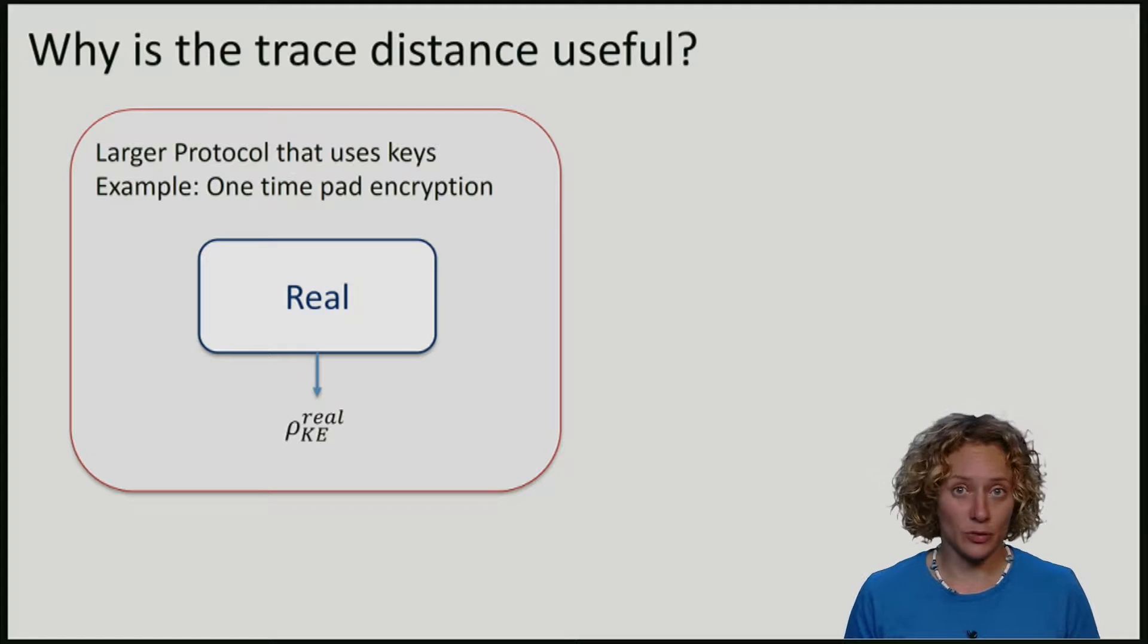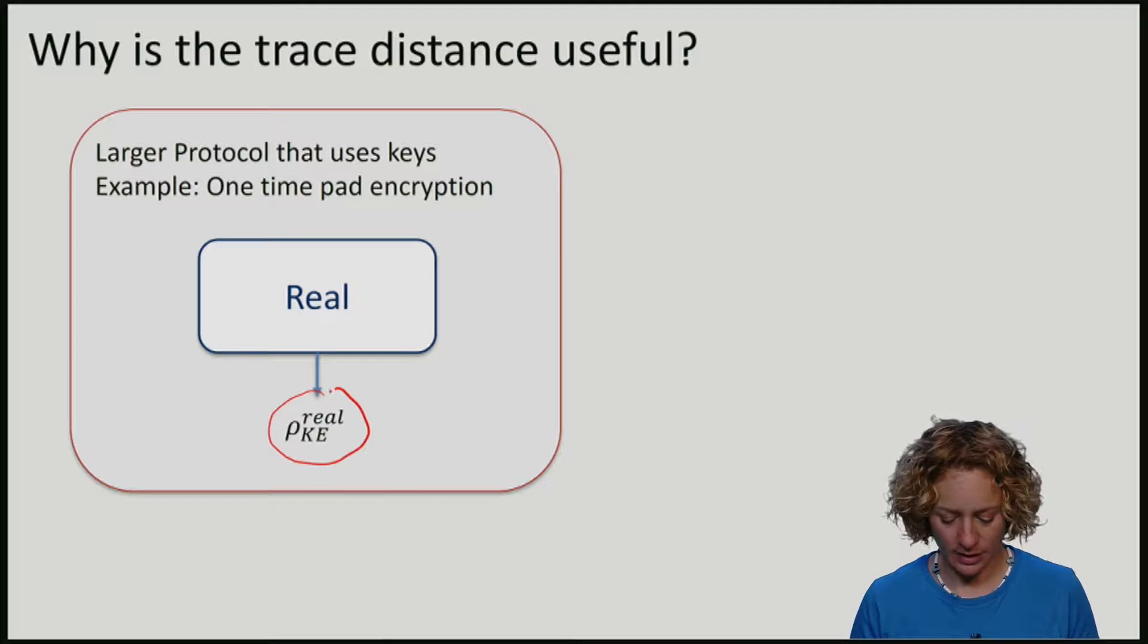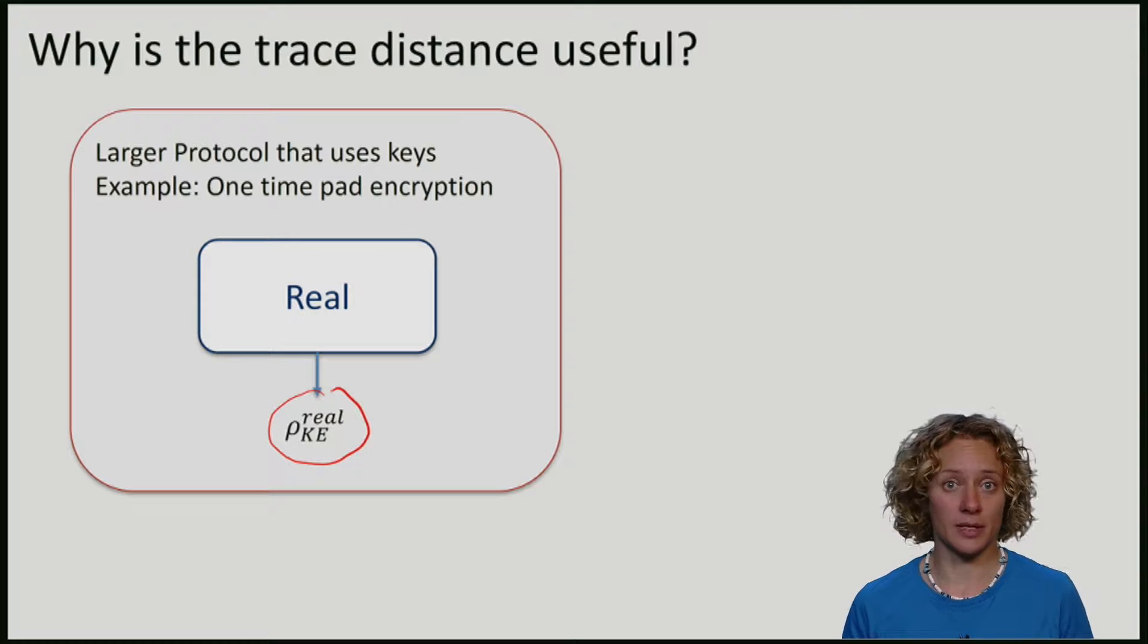If we have a real protocol that produces a real state KE, this is very difficult to analyze now what happens to the one-time pad. We may not even know exactly what the state is. We've done some tests, we've done some gains in confidence, but there's essentially no situation where we will be able to say exactly what the state looks like. So, how can we even analyze this huge protocol given this somewhat unknown real state?